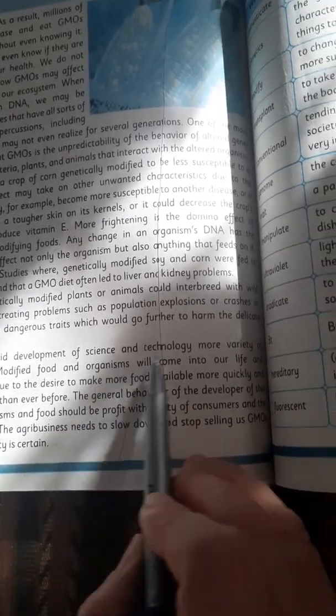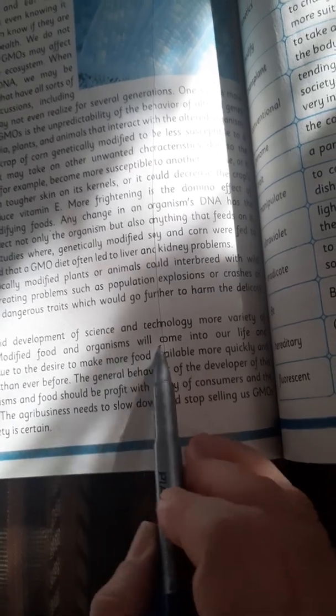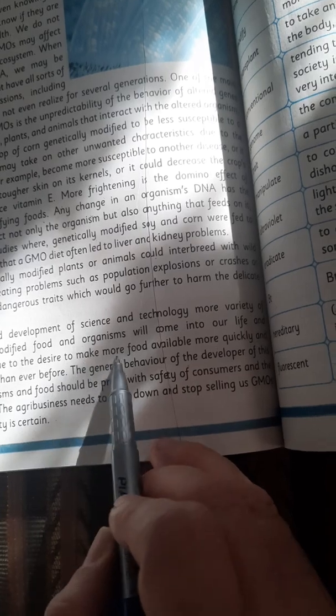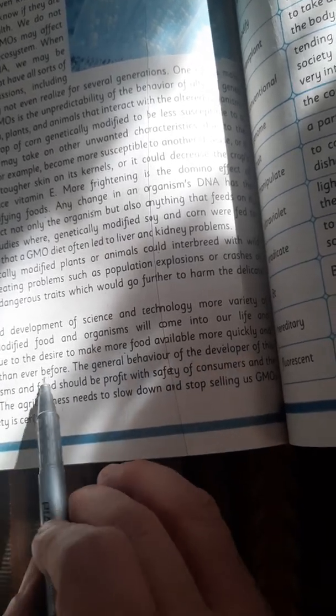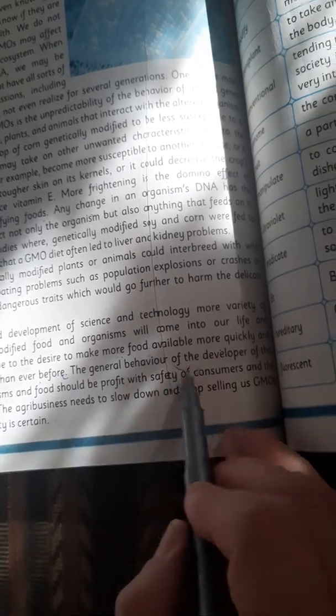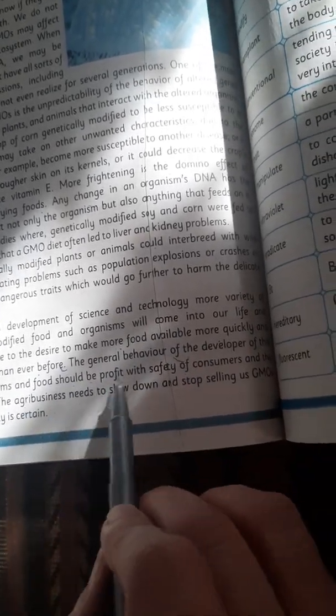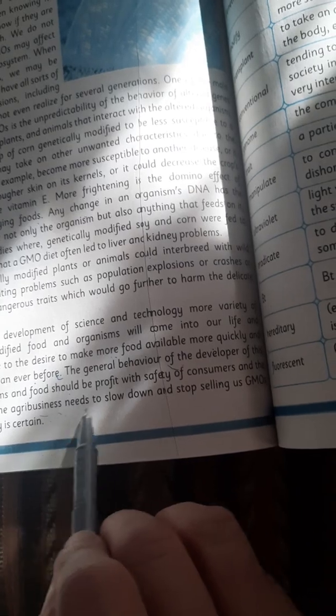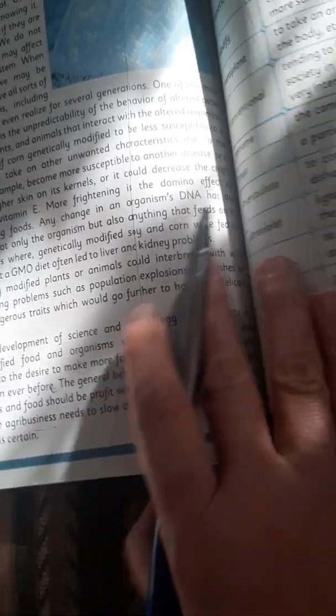With the rapid development of science and technology, more variety of genetically modified food and organisms will come into our life and surrounding, due to the desire to make more food available more quickly and more cheaply than ever before. The general behavior of the development of this type of organisms and food should be profit with safety of consumers and the environment. The agribusiness needs to slow down and stop selling us GMOs until their safety is certain.